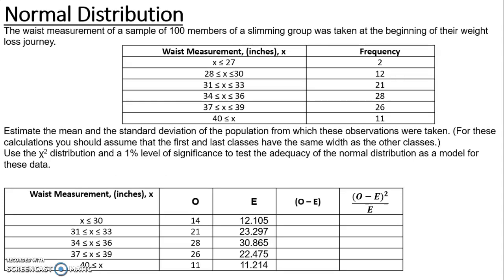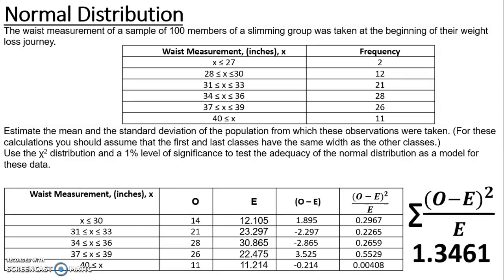Now I have my E values I can calculate the test statistic. I calculate O minus E — so 14 minus 12.105 — for each O and E pair, then square that and divide by E. That gives five contributions to the test statistic. The test statistic is the sum of (O minus E) squared over E, and adding up those five values gives 1.3416.